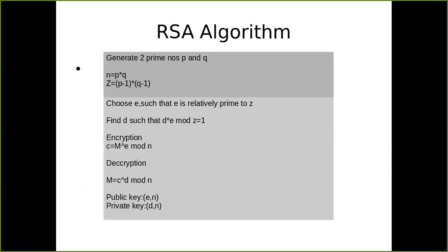The first step in the RSA algorithm is to choose two prime numbers — let's call them p and q. After that we find their product: n = p × q. Next, we compute Euler's totient of n, which I'm writing as z, calculated as z = (p − 1)(q − 1). This value z gives the count of numbers that are co-prime with respect to n.